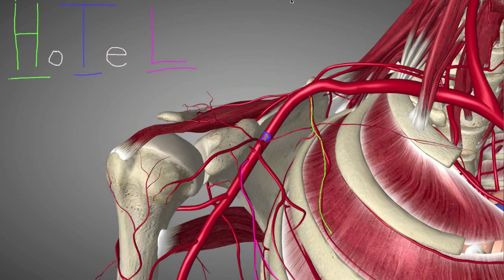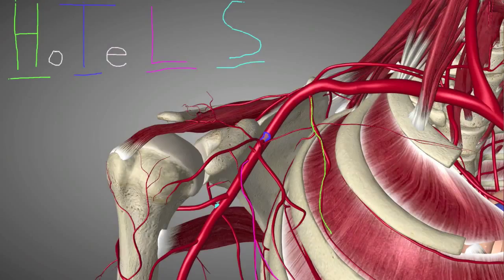In baby blue, we have the Subscapular Artery. Of the six branches of the Axillary Artery, this is really the only one that's pointing straight posteriorly, so we can't really see it from this view — it's back here. We'll turn the camera in a bit so you can see that. S stands for Subscapular Artery — that's the S in HOTEL SPA.